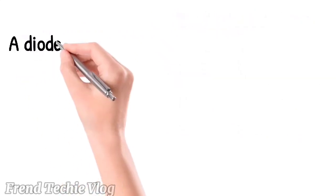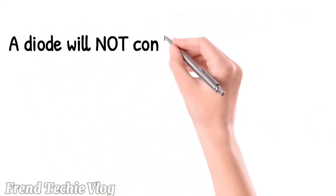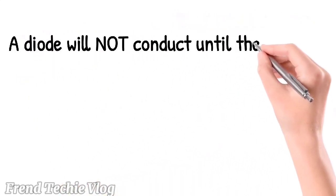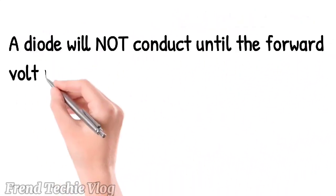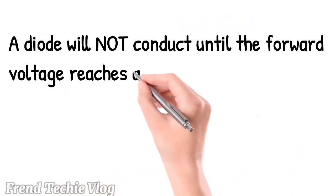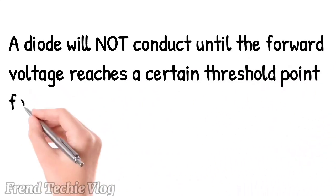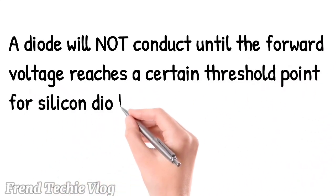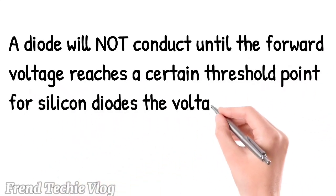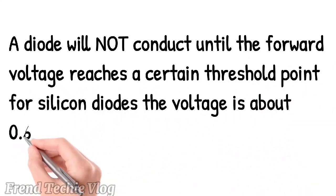A diode will not conduct until the forward voltage reaches a certain threshold point. For silicon diodes, this voltage is about 0.6 V.